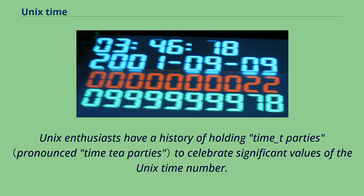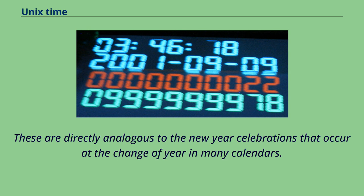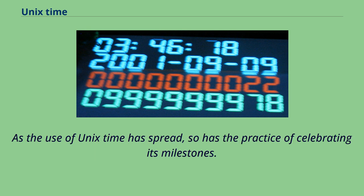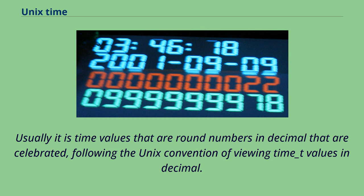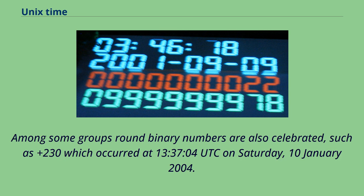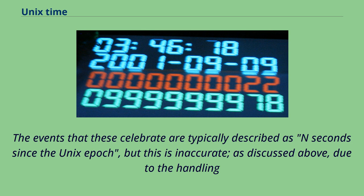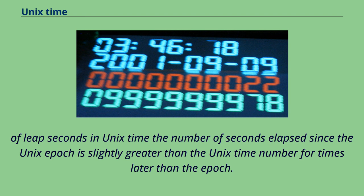Unix enthusiasts have a history of holding time_t parties to celebrate significant values of the Unix time number. These are directly analogous to the New Year celebrations that occur at the change of year in many calendars. Usually it is time values that are round numbers in decimal that are celebrated, following the Unix convention of viewing time_t values in decimal. Among some groups, round binary numbers are also celebrated, such as 2^30, which occurred at 13:37:04 UTC on Saturday, January 10, 2004. The events celebrated are typically described as 'N seconds since the Unix epoch,' but this is inaccurate, because due to the handling of leap seconds the number of seconds elapsed since the Unix epoch is slightly greater than the Unix time number.